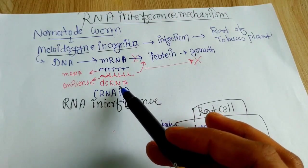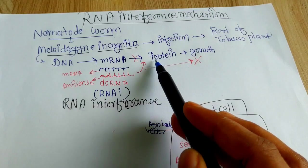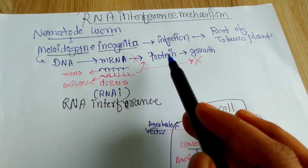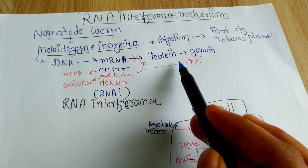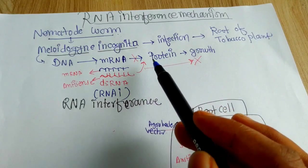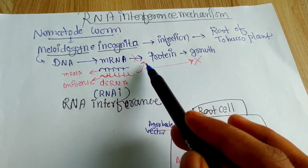Ultimately, when the double-stranded RNA forms, the protein synthesis will be blocked because translation process will not occur. And ultimately, the growth of the nematode in the tobacco plant will be prevented.